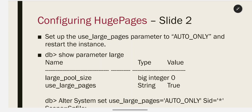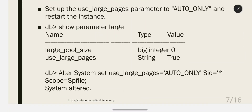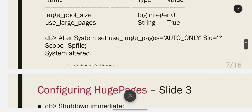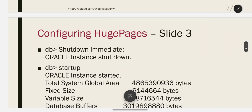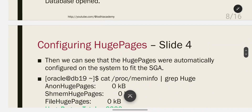Now we will set up the use_large_pages parameter to auto_only and restart the instance. Connect to the database and run the command to check the current value: show parameter large. It shows use_large_pages is 'true' by default. We then run: alter system set use_large_pages=auto_only sid=* scope=spfile — for all SIDs in a cluster database. Then shut down and restart the database.